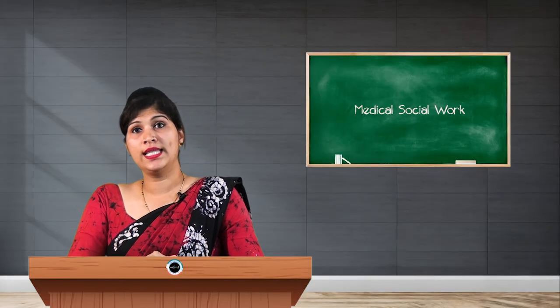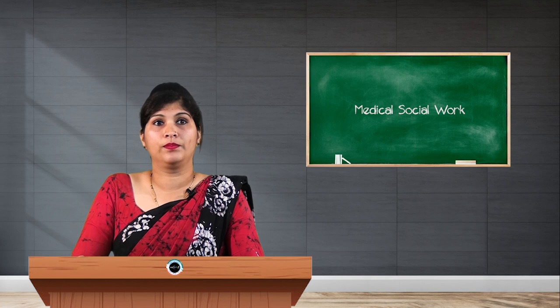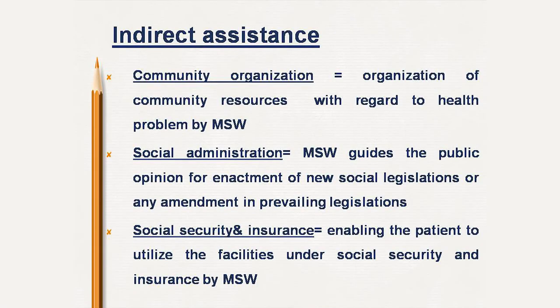Indirect means of assistance in medical social work include community organization, social administration, and social security and insurance. Community organization refers to organizing community resources with regard to health problems by the medical social worker. Social administration is where the medical social worker guides public opinion for the enactment of new social legislations or amendments to prevailing legislations. Social security and insurance refers to enabling the patient to utilize the facilities under social security and insurance by giving awareness and education about the available schemes.